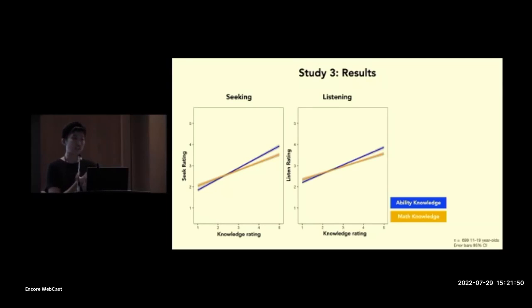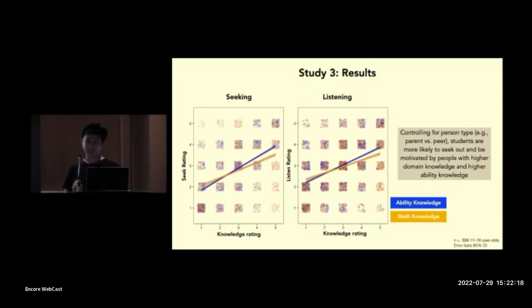So after controlling for the participants' relationship to the person, we see that others' knowledge of their math abilities and knowledge of the math in their current math class positively predicted who they would turn to for encouragement and whose encouragement they would actually seek out. And I want to note here that we actually never prompted students to think about each person's knowledge while they were responding to the test questions. We always ask them about knowledge at the very end of the task. And here are the individual data points if you're curious. And you can see how highly correlated the knowledge ratings are.